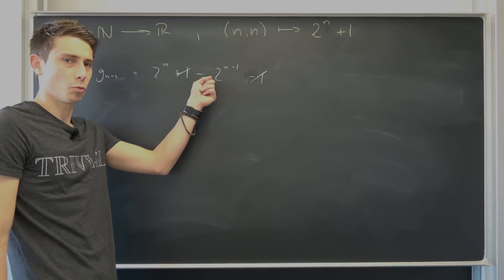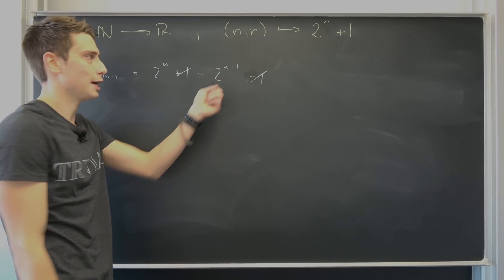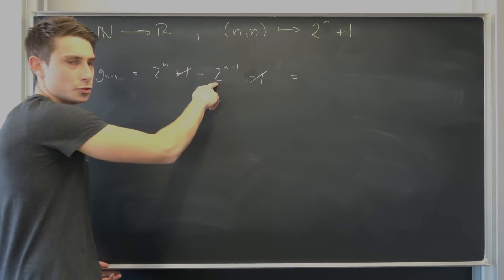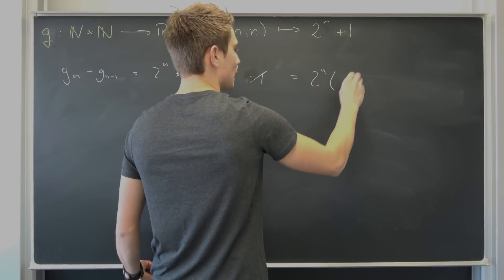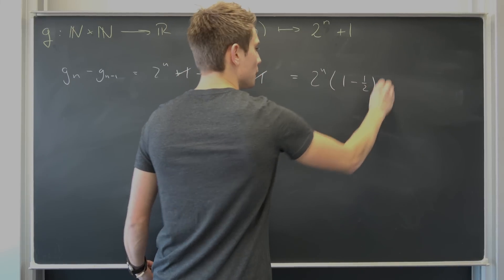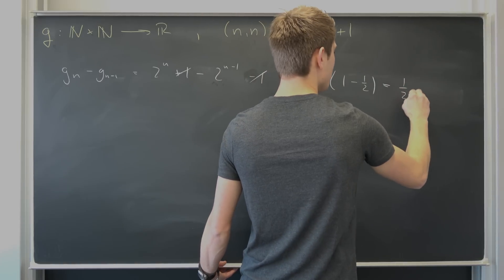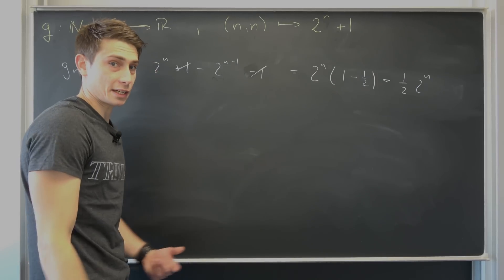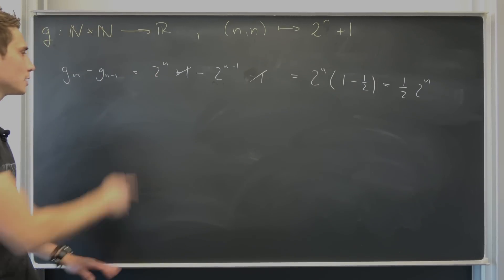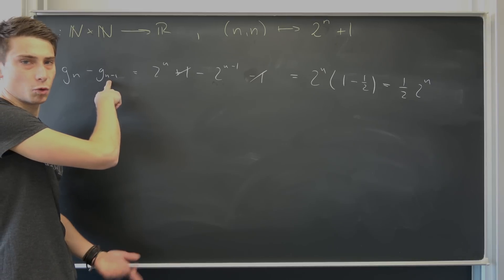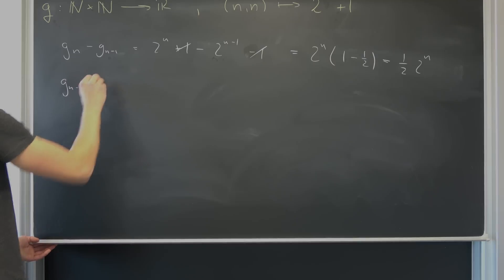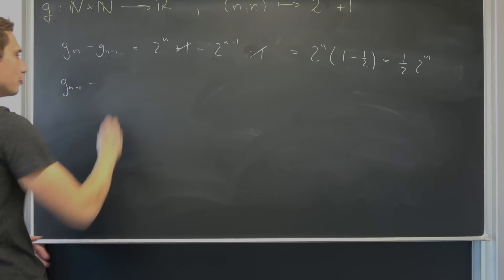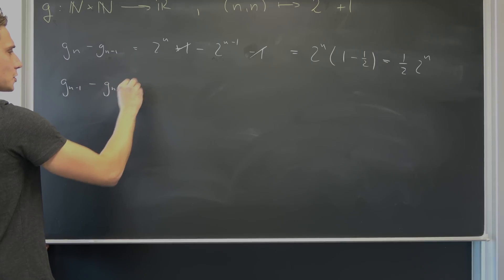This and that is going to cancel out once again. This is nothing but 1/2 times 2^n. So we can factor out the 2^n once again. So this is 2^n times (1 minus 1/2). So overall, this is nothing but 1/2 times 2^n. Now for the second system of equation, we are going to consider g_{n-1}. g_{n-1}, and we are going to subtract the member before it, g_{n-2}.